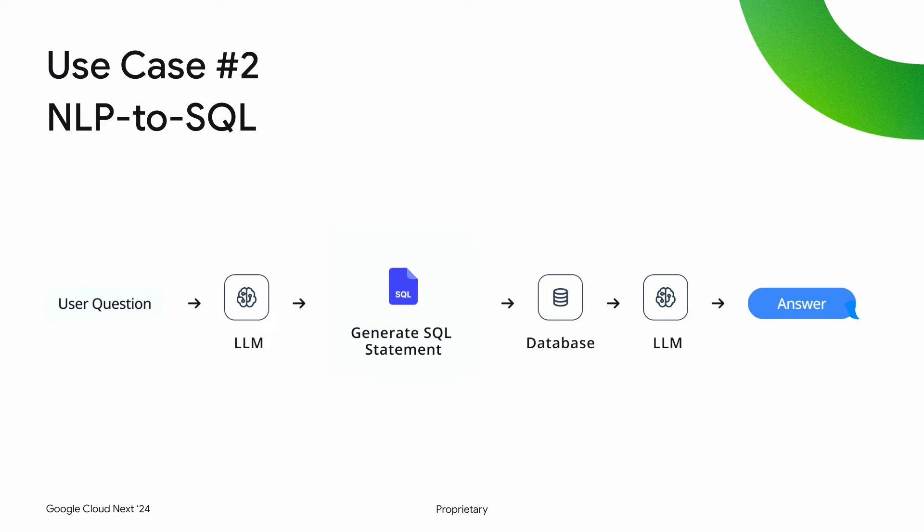Another really big use case is enabling question answering over structured information — natural language to SQL. Some people can write SQL, but a lot of people can't, or they don't know what certain columns or databases are. The basic idea is that you use a language model to generate a SQL statement passed to a semantic layer on top of a SQL database, that's executed against the database, and then you use that result together with an LLM to create an answer. There are a bunch of different steps you need to chain together, and the database is really key to this whole part.